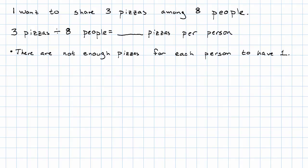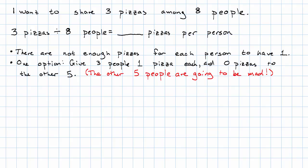Well, one of the options that we talked about for handling remainders was to just be as even as possible. So we could give 3 of the people an entire pizza each, and then nothing to the other 5. That doesn't sound like a good idea. I think that those other 5 people are not going to help me move again. Those other 5 people are going to be mad.